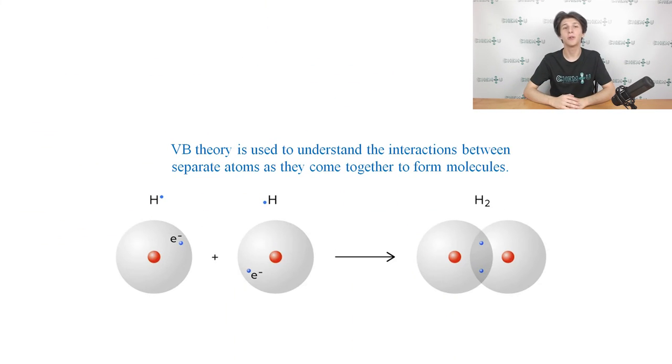The valence bond theory, or VB theory, is used to understand the interactions between separate atoms as they come together to form molecules. Valence bond theory assumes that all bonds are localized bonds formed between two atoms by the donation of an electron from each atom. This is actually an invalid assumption, because many atoms bond using delocalized electrons. Valence bond theory describes covalent bond formation, as well as the electronic structure of molecules.